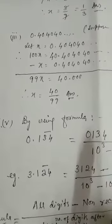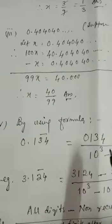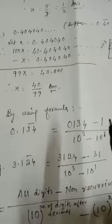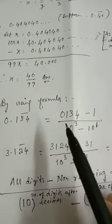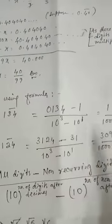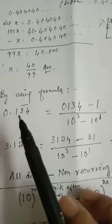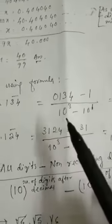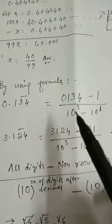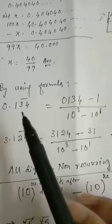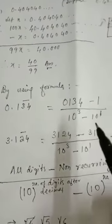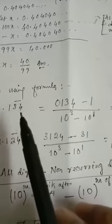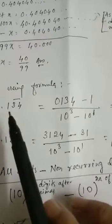So this is number 8, fifth sum: given 0.134 with bar over 3 and 4. So two recurring digits. Here you write all the numbers together — 0, 1, 3, 4 — all the digits written together, minus the non-recurring digit, that is 1. So subtract that non-recurring digit, then divide by 10 to the power the number of digits after decimal. After decimal you have 3 digits, so 10 to the power 3, minus 10 to the power the number of non-recurring digits after decimal. Here the non-recurring digit is only 1, so write 10 to the power 1.